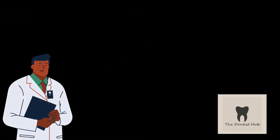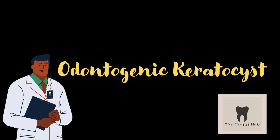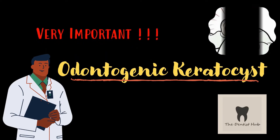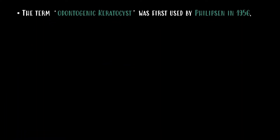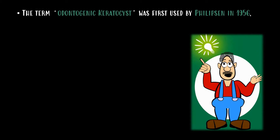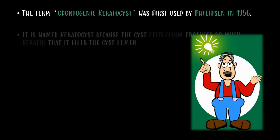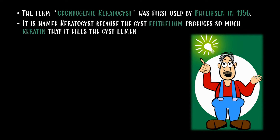Hello everyone and welcome to the Dentist Hub. Today's video is about odontogenic keratocyst, which is an important question in oral pathology. The term odontogenic keratocyst was first used by Philipson in 1956. It is named keratocyst because the cyst epithelium produces so much keratin that it fills the cyst lumen.